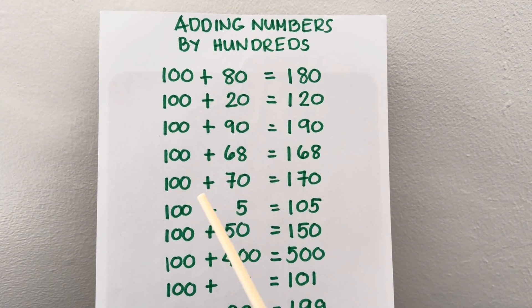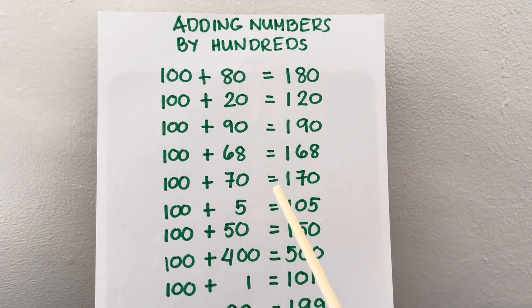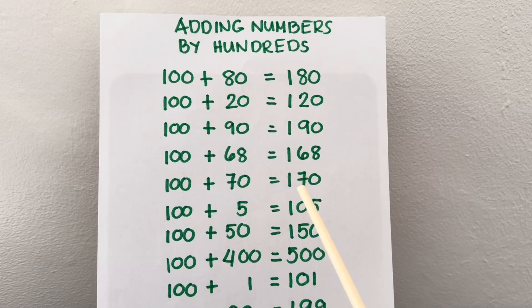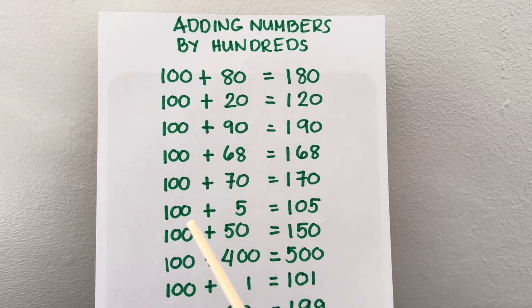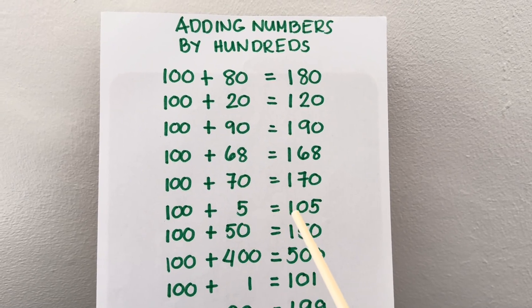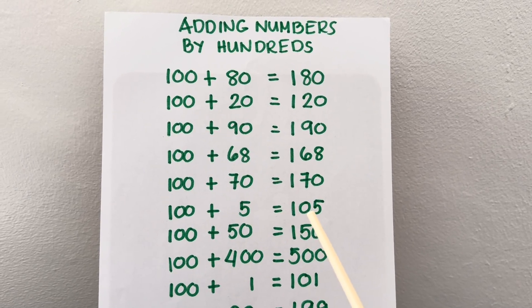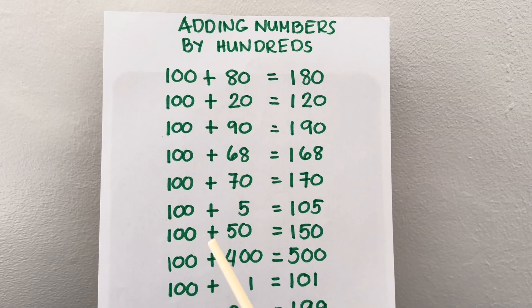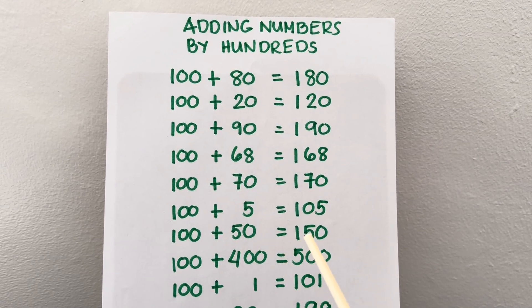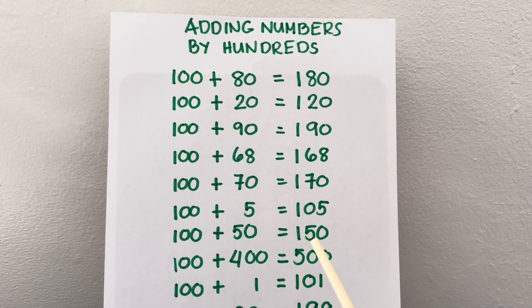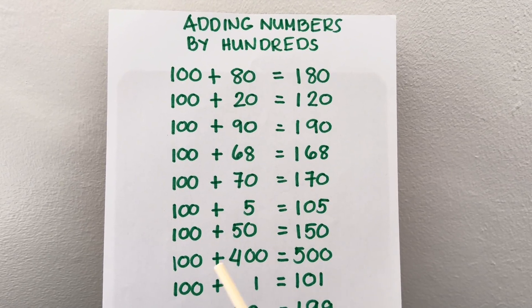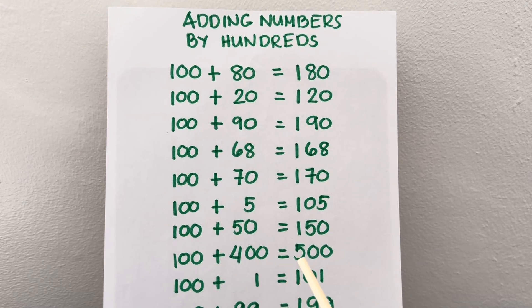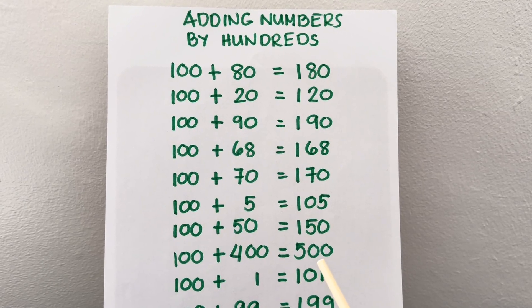100 plus 70 is equals to 170. 100 plus 5 is equals to 105. 100 plus 50 is equals to 150. 100 plus 400 is equals to 500.